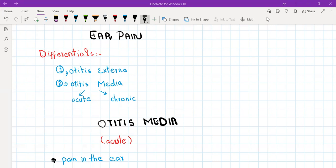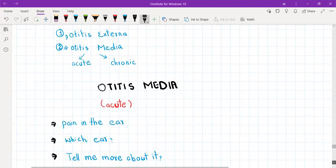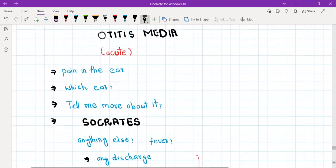Now otitis media can be acute or chronic. Chronic otitis media is mostly due to cholesteatoma. Today we are mainly going to discuss acute otitis media. As I already told you, acute otitis media presents with ear pain.